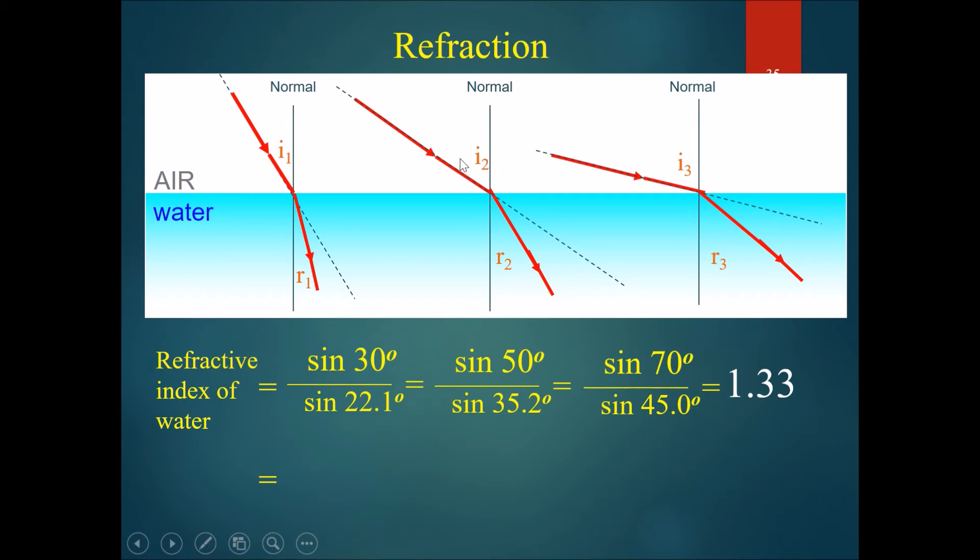If the incident angle was 50 degrees, it would produce an angle of 35.2 degrees. Sine 50 divided by sine 35.2 would once again give you 1.33. The same thing would occur if the incident angle was 70 degrees, producing an angle of 45 degrees. Sine 70 divided by sine 45 will give you 1.33 as well.